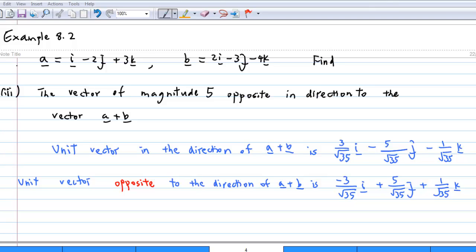Then, the unit vector opposite to the direction of a plus b is minus 3 over square root 35 i plus 5 over square root 35 j plus 1 over square root 35 k.